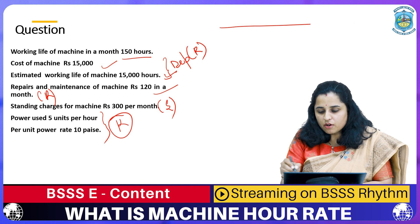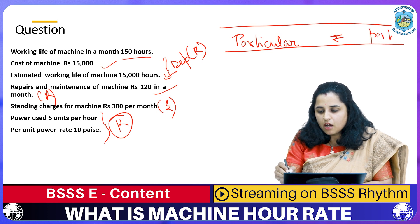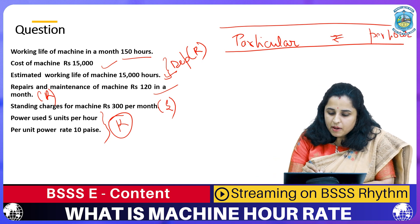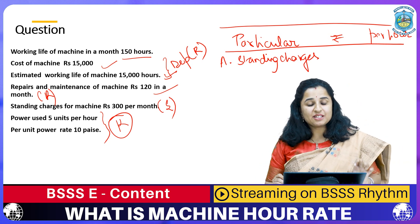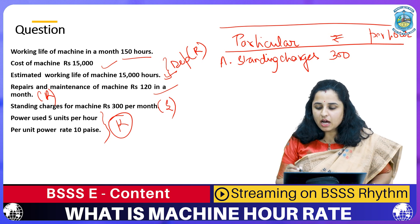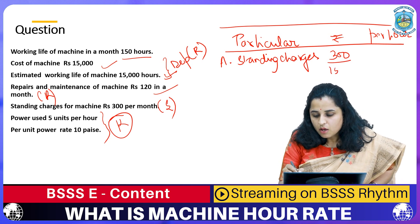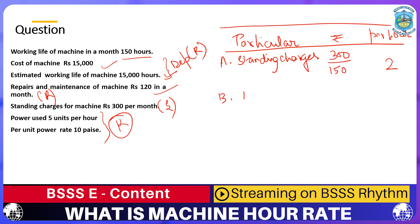Setting up the format with columns for Particular, Amount, and Per Hour Cost. Under Part A — Standing Charges: ₹300 per month ÷ 150 hours = ₹2 per hour.